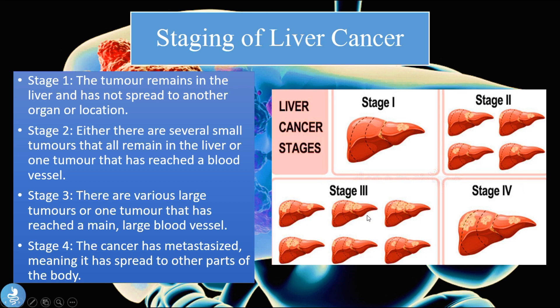Stage three means there are various large tumors or one tumor has reached a main large blood vessel. Stage four means the cancer has metastasized, meaning it has spread to other parts of the body. Common sites of metastasis for liver cancer include the kidneys, the lungs, the lymph node system, and the bone marrow.